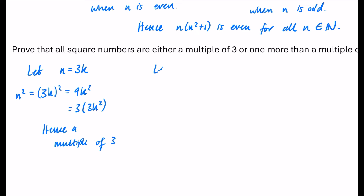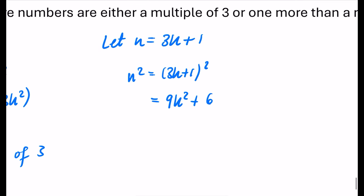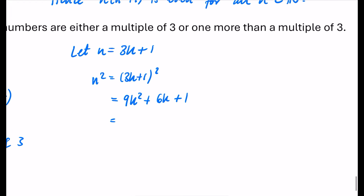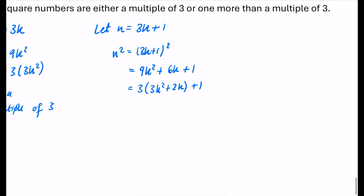Now let n be one more than a multiple of 3, so n equals 3k plus 1. Then n squared equals (3k plus 1) squared, which is 9k squared plus 6k plus 1. Factoring out 3 from the first part gives 3(3k squared plus 2k) plus 1. That is clearly one more than a multiple of 3. Hence it is one more than a multiple of 3.